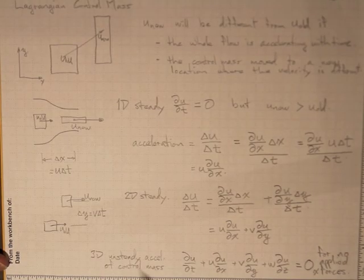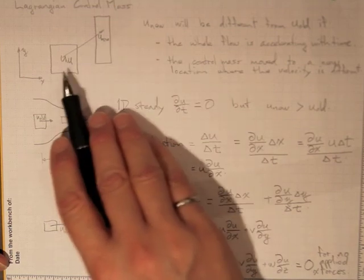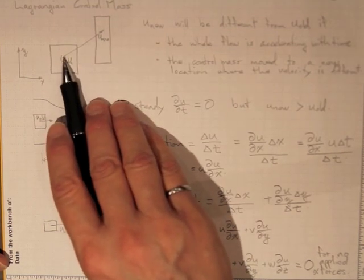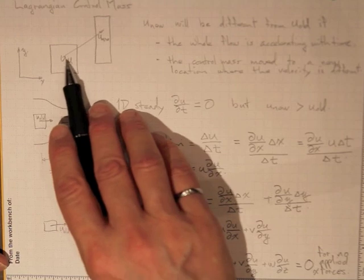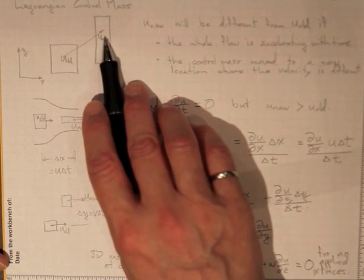I think acceleration makes a little more sense if we're just talking about a Lagrangian control mass. This chunk of mass goes from here up to here. It goes from having an old velocity down here up to having its new velocity up there.